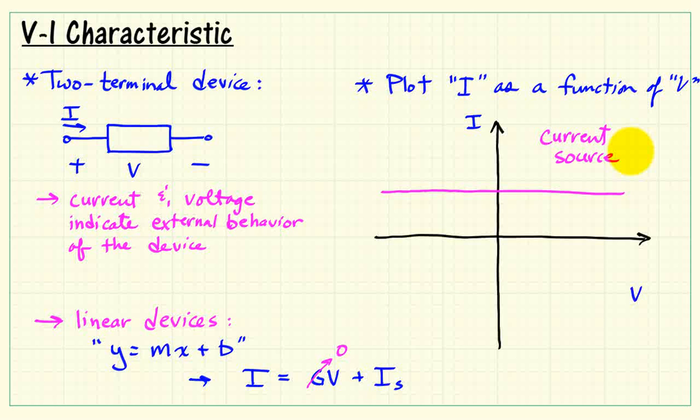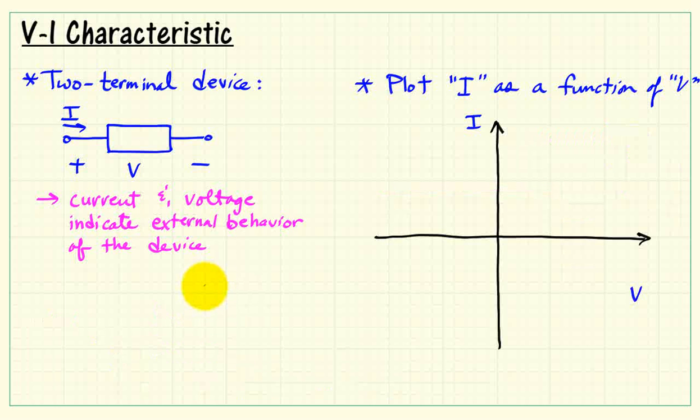All right, so that was the number of possibilities for linear devices. Now, a nonlinear device would have a characteristic which is not a straight line. And there's a lot more nonlinear devices than linear devices out there, actually.